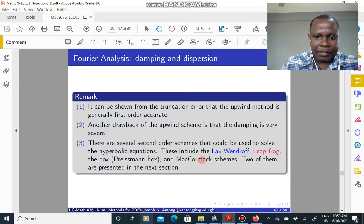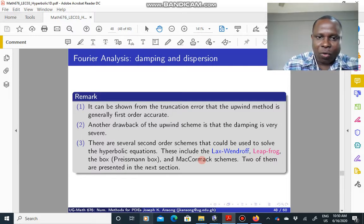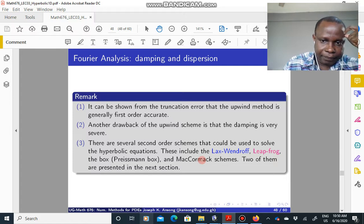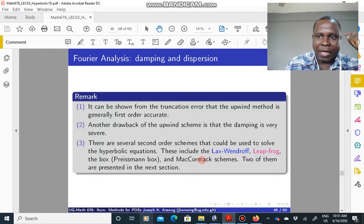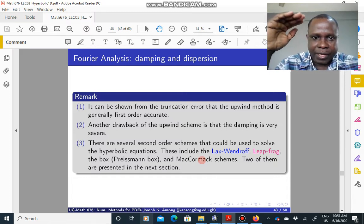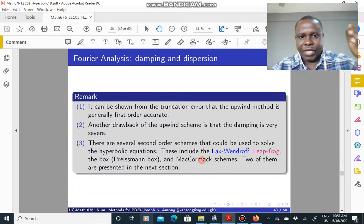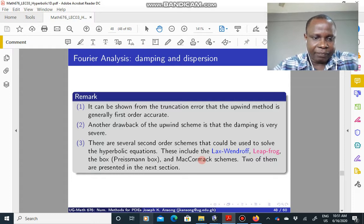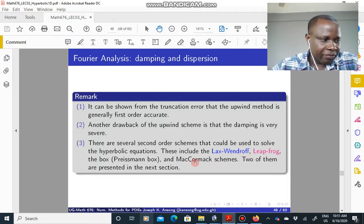So let's summarize this. The upwind scheme has a truncation error of order 1, it's generally of first order from the truncation error. One of the drawbacks is that the damping can be very severe. You saw that in the movie, that once you start the movie, starting from 1, it just drops. So the damping can be very severe in the upwind scheme.